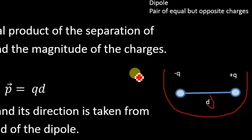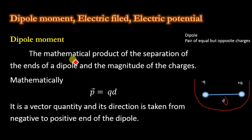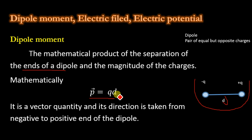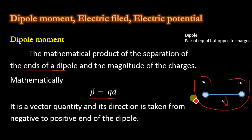Dipole moment is defined as the mathematical product of the separation of the ends of a dipole and the magnitude of the charges. Mathematically, dipole moment can be written as p = qd, where q is the charge and d is the distance of separation between the two charges or between the two poles. Dipole moment is a vector quantity, and its direction is taken from the negative to the positive end of the dipole.